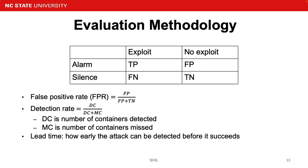If SHAO raises an alarm but there is no exploit, then it is a false positive; otherwise, it is a true positive. If SHAO keeps silent and there is no exploit, then it is a true negative; otherwise, it is a false negative. We use those definitions to calculate the false positive rate. Detection rate is the ratio of the number of containers detected over the total number of containers, including both detected and missed. We also use lead time to define how early an attack can be detected before it succeeds — the more lead time we have, the better the model performs.